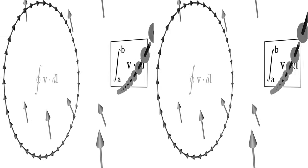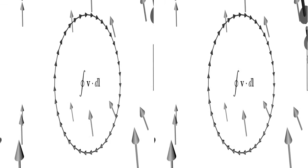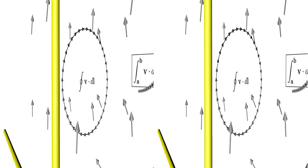If the path forms a closed loop, such that you end up where you started, it is called a closed line integral.